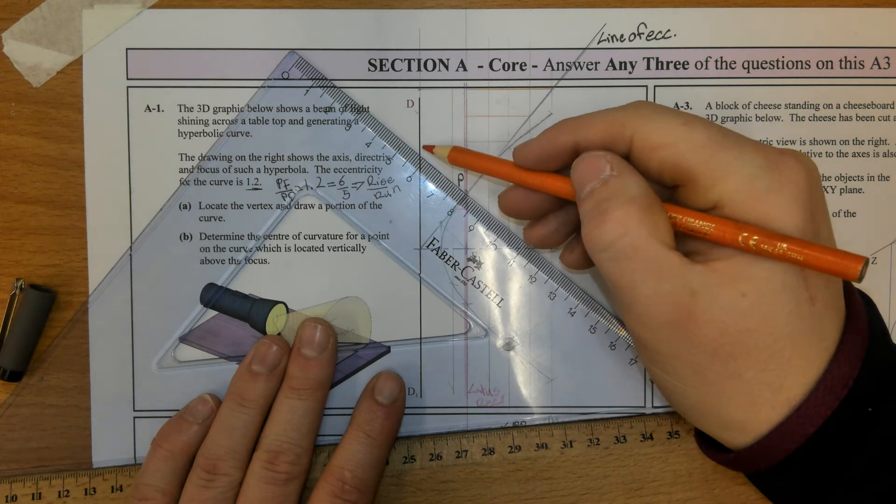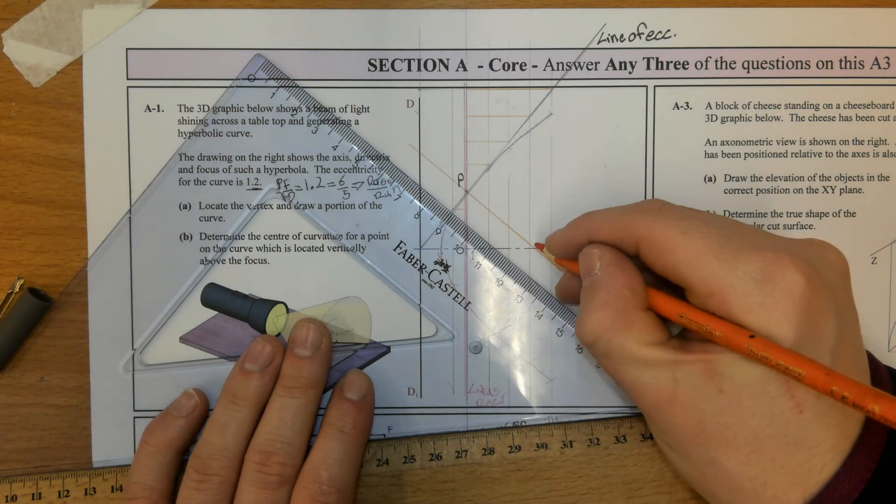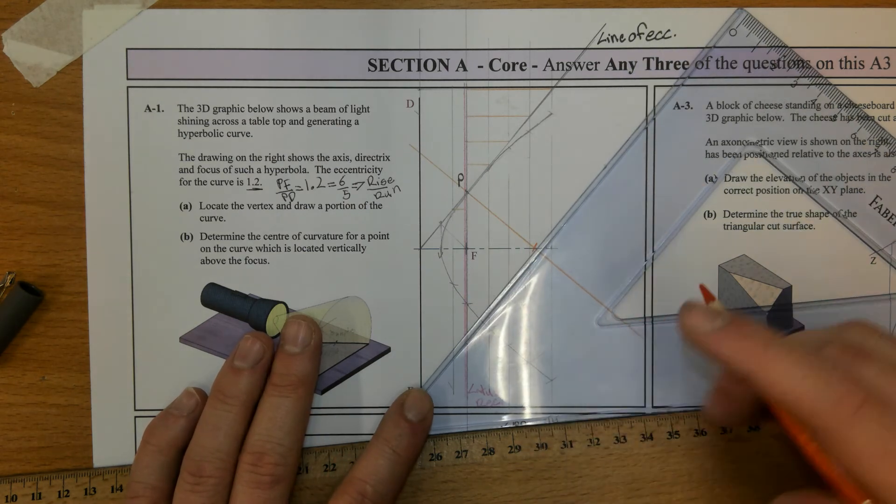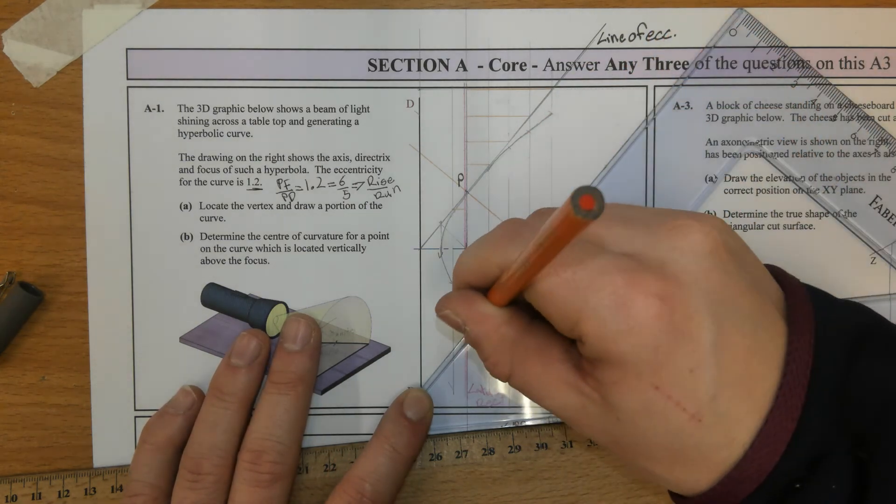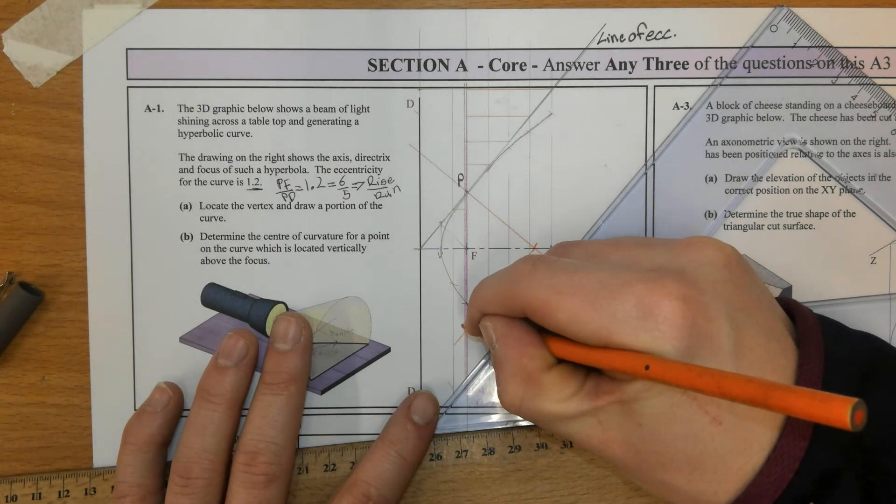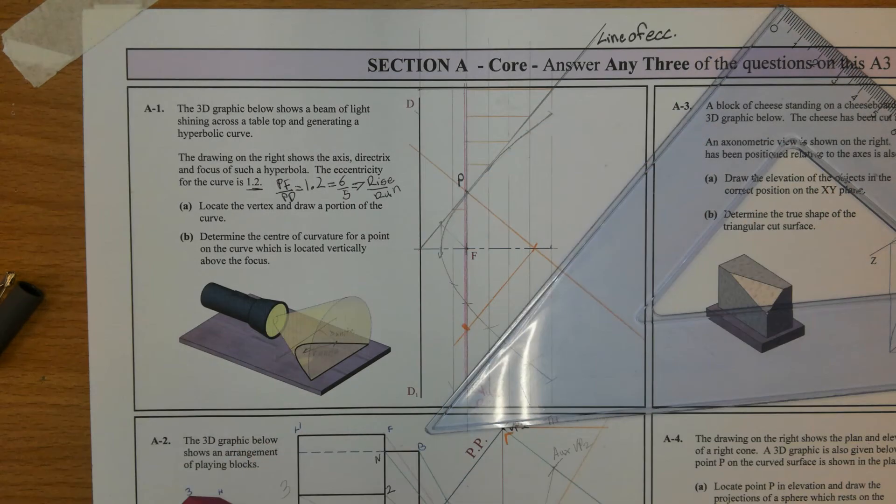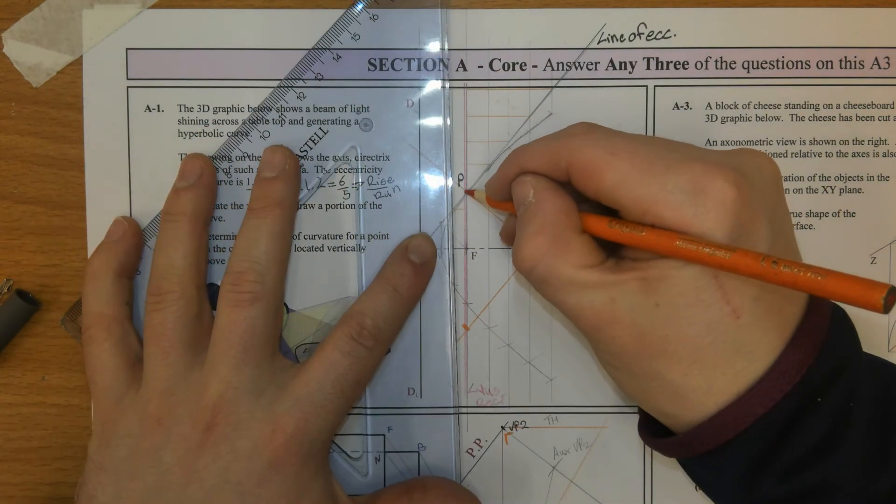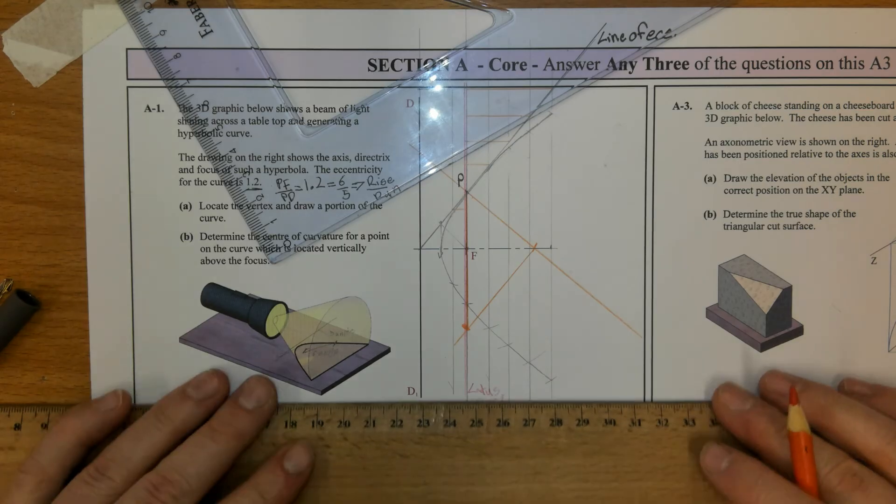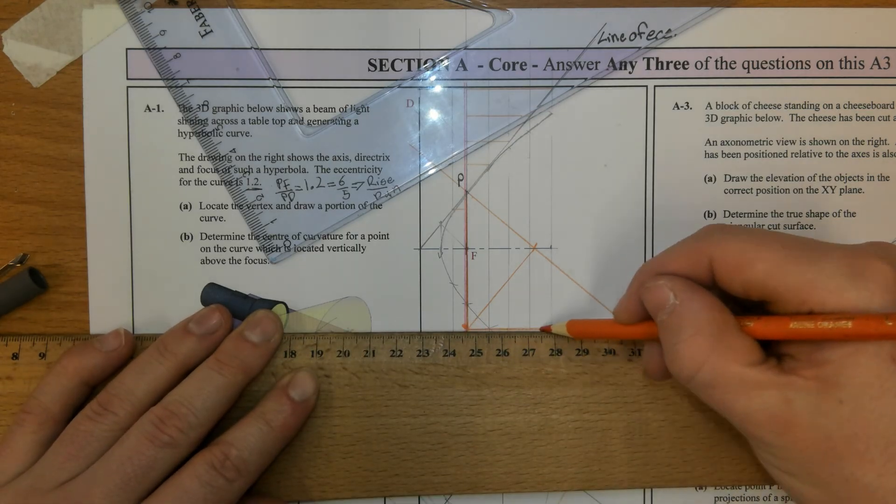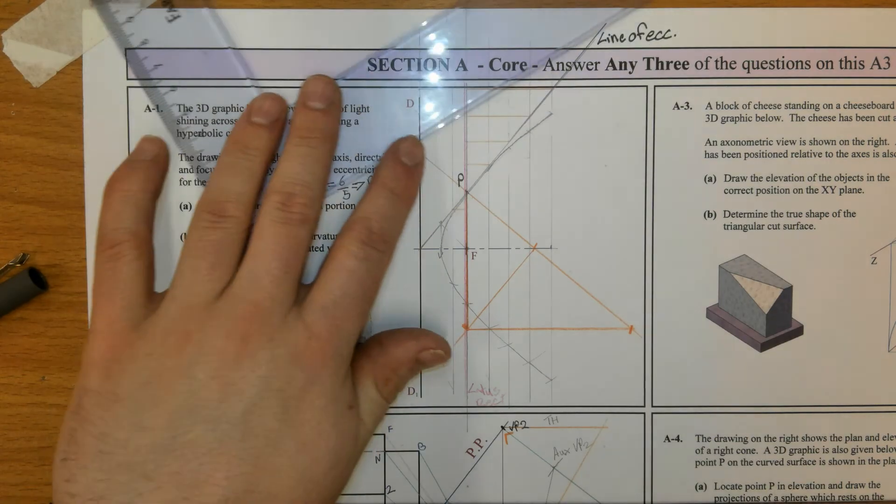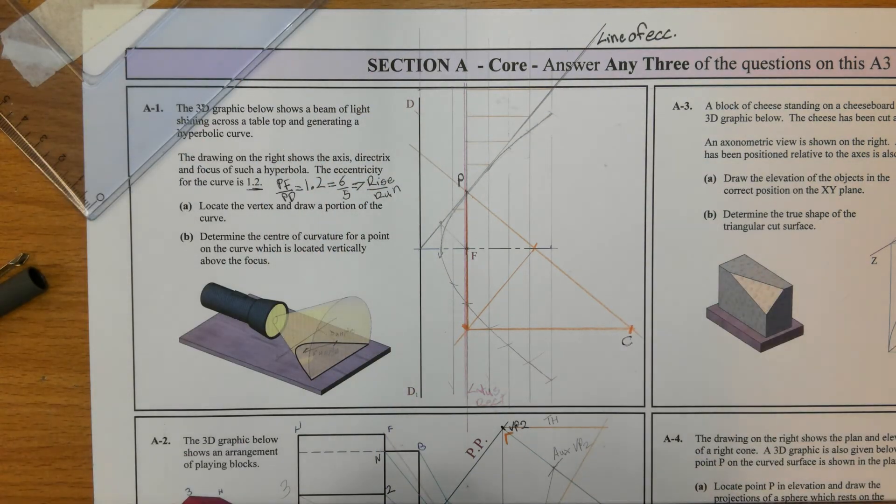This is the normal. Where the normal pierces the major axis, we're going to draw a line parallel to the tangent. Now, we extend P to F, the lattice rectum, basically. And then, from the line P to F, we're going to go perpendicular to that and where it intersects the normal, that's C for the center of curvature.